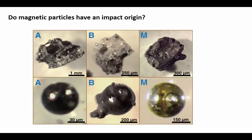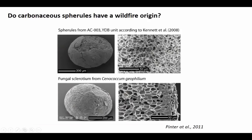However, opponents of the impact hypothesis have strongly argued that there is a much more conventional explanation for things like magnetic particles, which can come from rocks and be rounded and concentrated by wind or by river processes. The same thing with carbon particles or carbonaceous spherules — these don't have to come from wildfires. For example, a 2011 paper pointed out that a carbon spherule attributed to wildfire actually looks identical to a fungal sclerotium. So are these things really from wildfire, or could they be from naturally occurring soil processes?